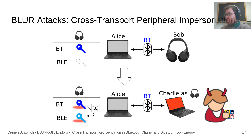Using a similar strategy, Charlie can also impersonate Bob across transports. For example, Charlie, despite impersonating a peripheral on BLE, can present to Alice over BT as a central, complete BT pairing, and take over Bob on both BT and BLE. This attack not only results in impersonation of arbitrary peripherals, but also reveals another CTKD issue: cross-transport role mismatching. This trick of mismatching roles across transports is also novel.